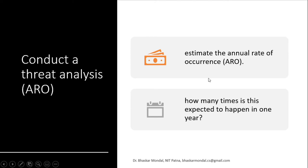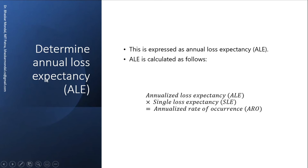Conduct a threat analysis and estimate the annual rate of occurrence, which we have already seen in the previous table — how many times is this expected to happen in one year? This is called ARO. Then determine Annual Loss Expectancy: ALE equals Single Loss Expectancy multiplied by Annualized Rate of Occurrence, so ALE equals SLE multiplied by ARO.